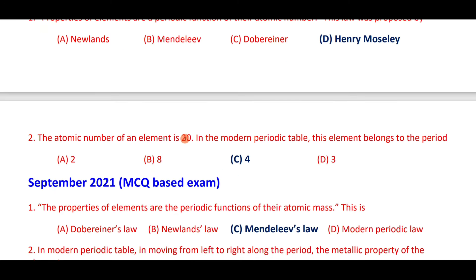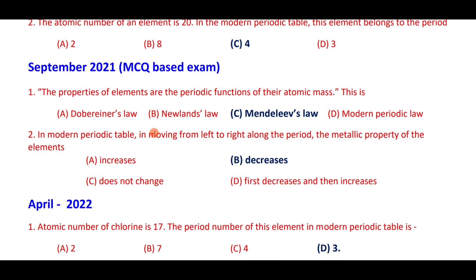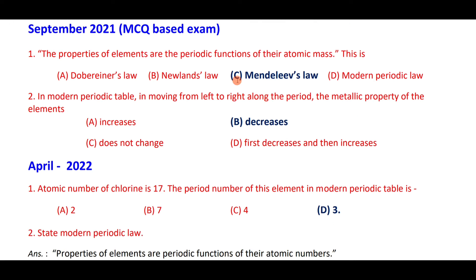Element with atomic number 20 has electronic configuration with four shells — it belongs to period 4. Mendeleev proposed that properties of elements are periodic functions of their atomic mass. In the modern periodic table, moving from left to right along a period, metallic property decreases and non-metallic property increases.